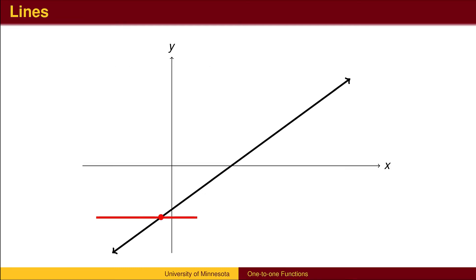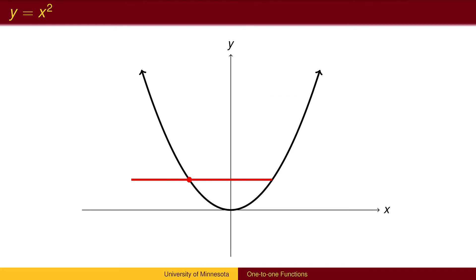A line with positive slope is one-to-one, since each y output will intersect the line exactly once. Y equals x squared is not one-to-one, since the y output of 4 corresponds to both the x values 2 and negative 2.